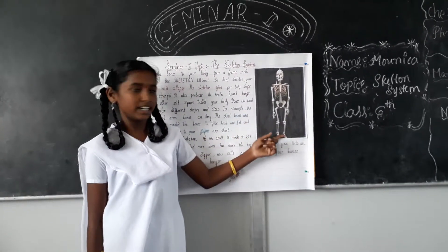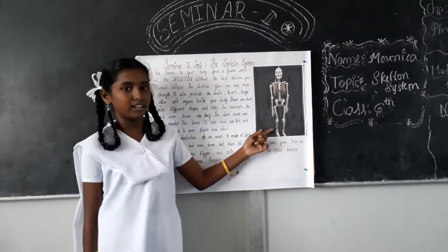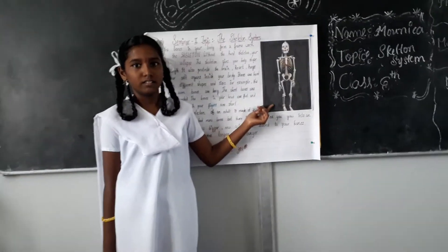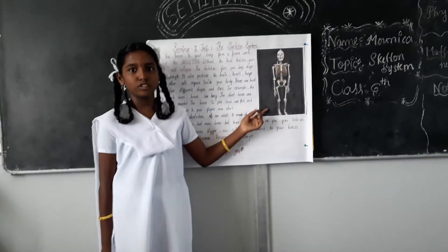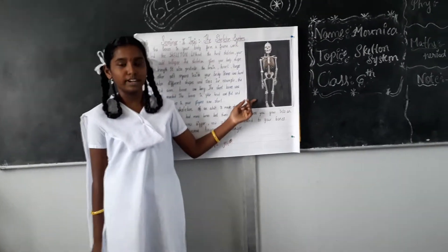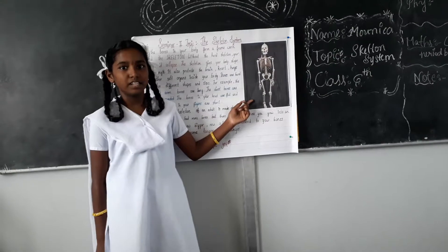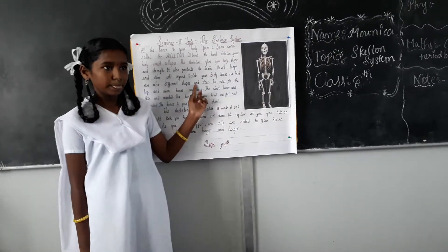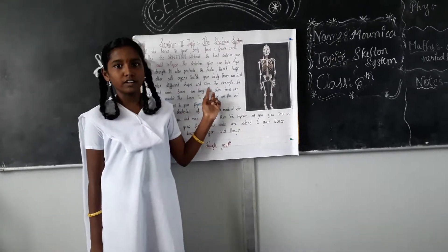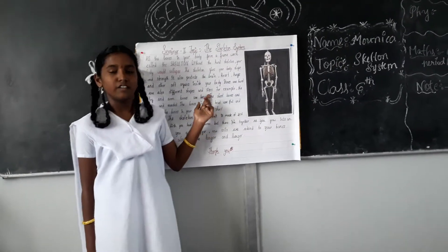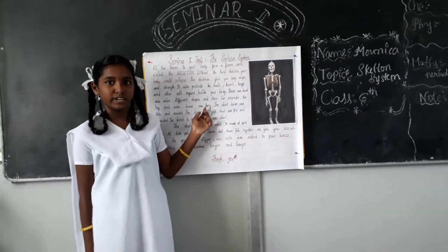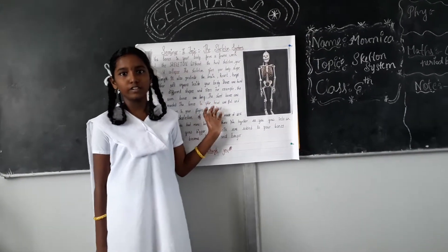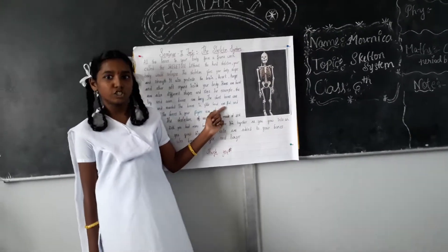For example, leg and arm bones are long. The chest bones in our body are thin and rounded. The bones in our head are flat and rounded. The bones of our fingers are short.